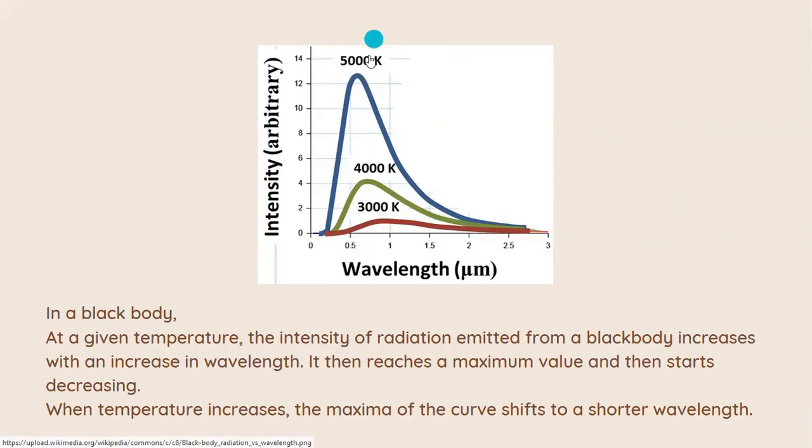This is called the maxima, and then it decreases. So here if you notice, for 5000 Kelvin, you have the intensity increasing with increase in wavelength, and it reached a particular maximum position and then started to decrease. It's the same for all these three, but notice when you have the temperature increasing, let's look at the maxima point.